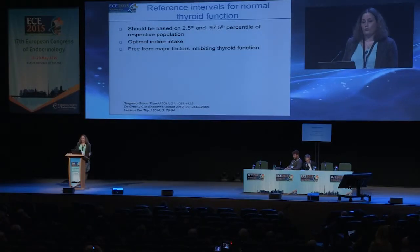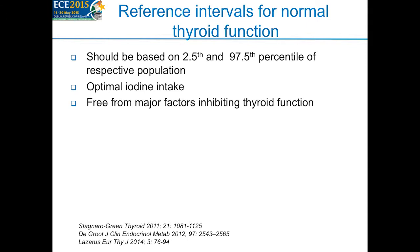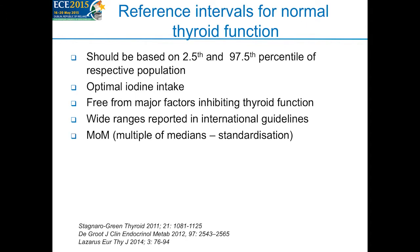When we decide on reference ranges, these should be based on the 2.5th and 97.5th percentile of that respective population. Ideally, the population should have an optimal iodine intake, and women should be free from major factors inhibiting thyroid function, including being TPO antibody positive or taking thyroid-related drugs. International guidelines report wide ranges. The multiple of medians method — dividing the individual value by the median population value — is a way of standardizing and adjusting thyroid function test values, producing much tighter reference ranges.